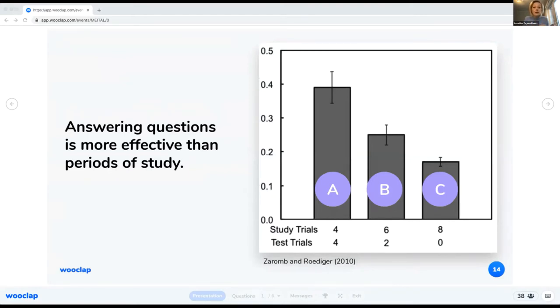And group B, they had six periods of study and only two test trials. And group C had eight study trials and no test trials. So we actually see that answering questions is much more effective than periods of study. The more active way to learn is to practice tests.